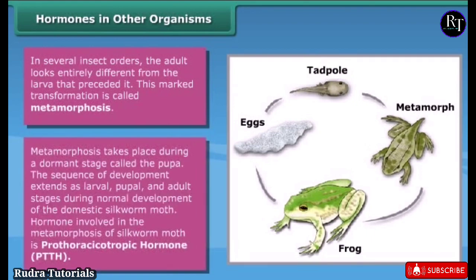Metamorphosis takes place during a dormant stage called the pupa. The sequence of development extends through larval, pupal, and adult stages. During normal development of the domestic silkworm moth, the hormone involved in metamorphosis is pro-thoracicotropic hormone (PTTH).